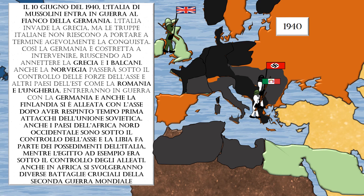North and West African countries were also under Axis control. Libya was part of Italy's possessions, while Egypt, for example, was under Allied control. Several crucial battles of World War II would also take place in Africa.